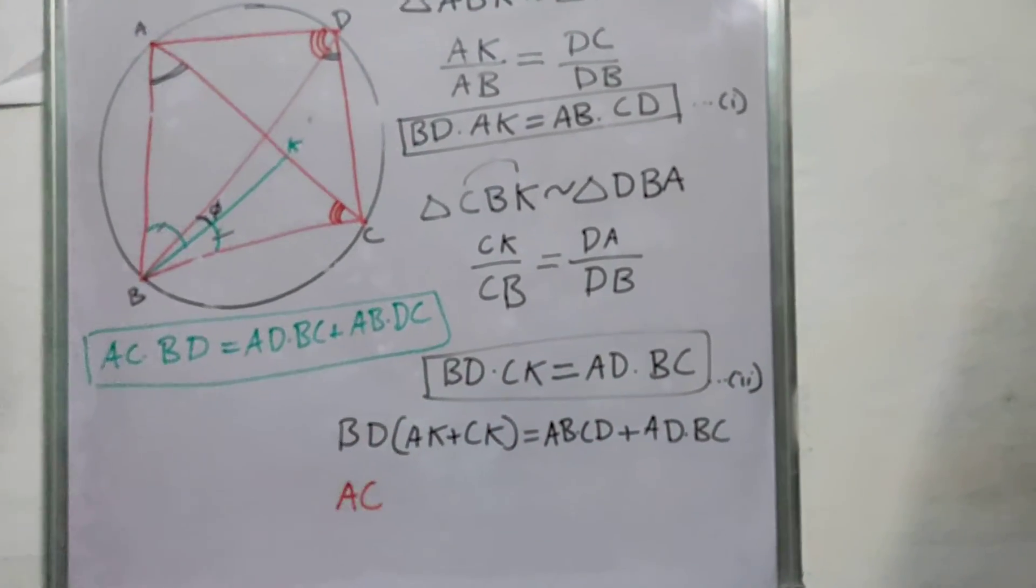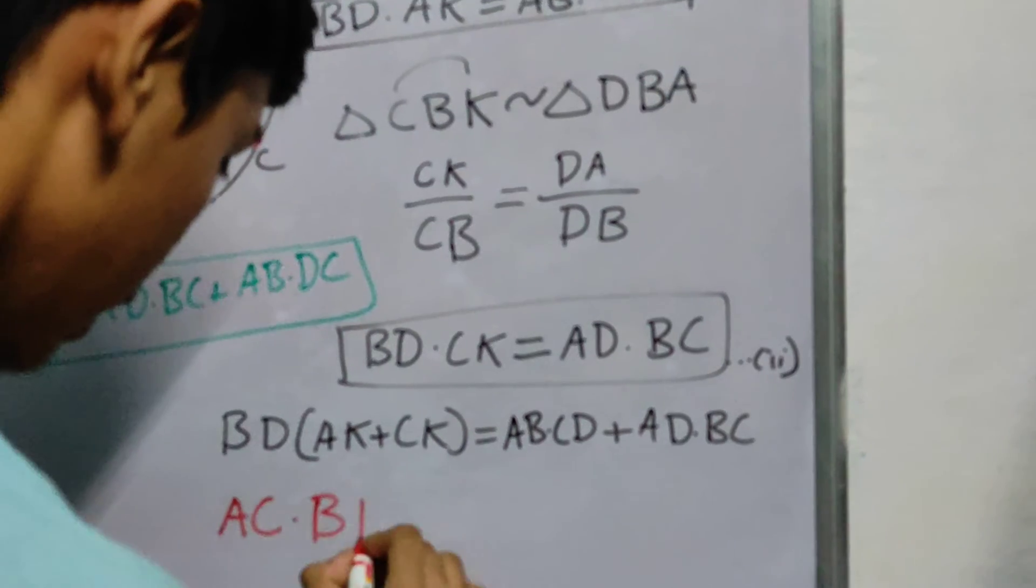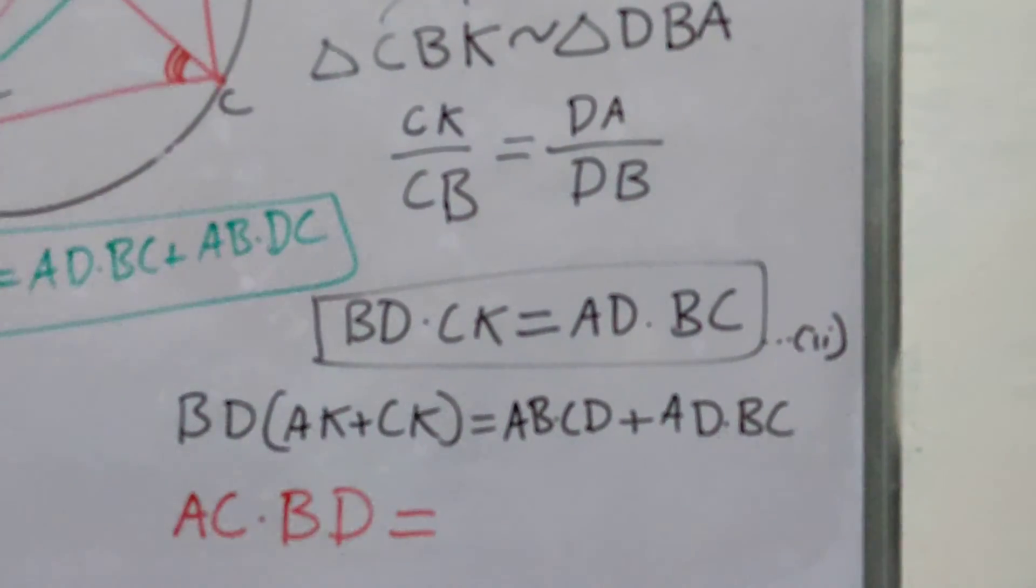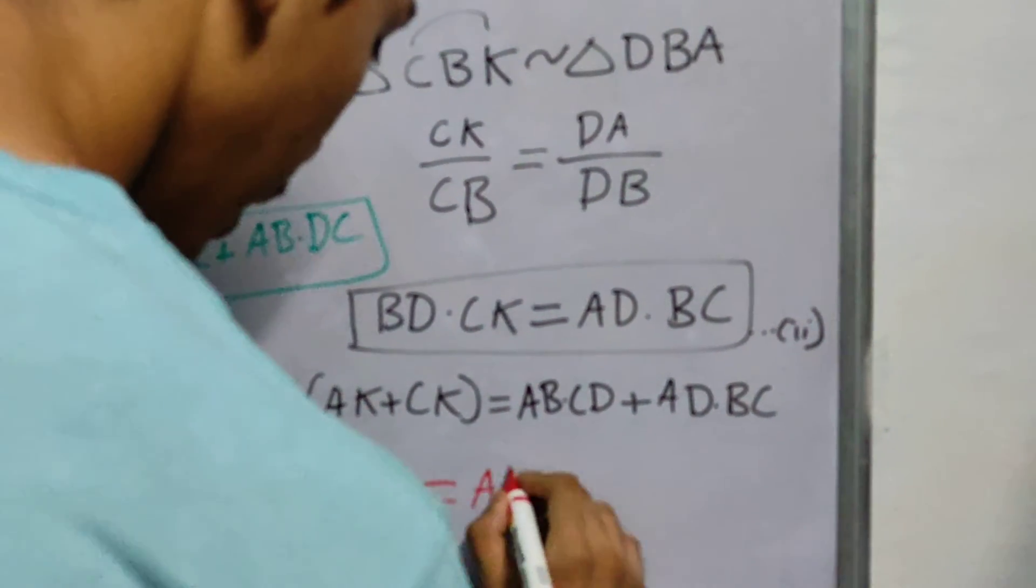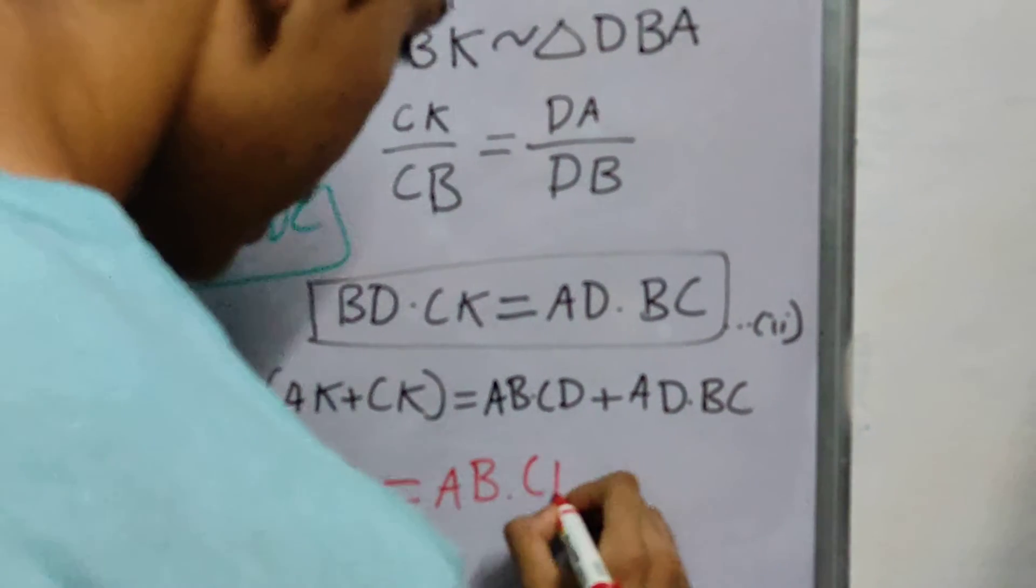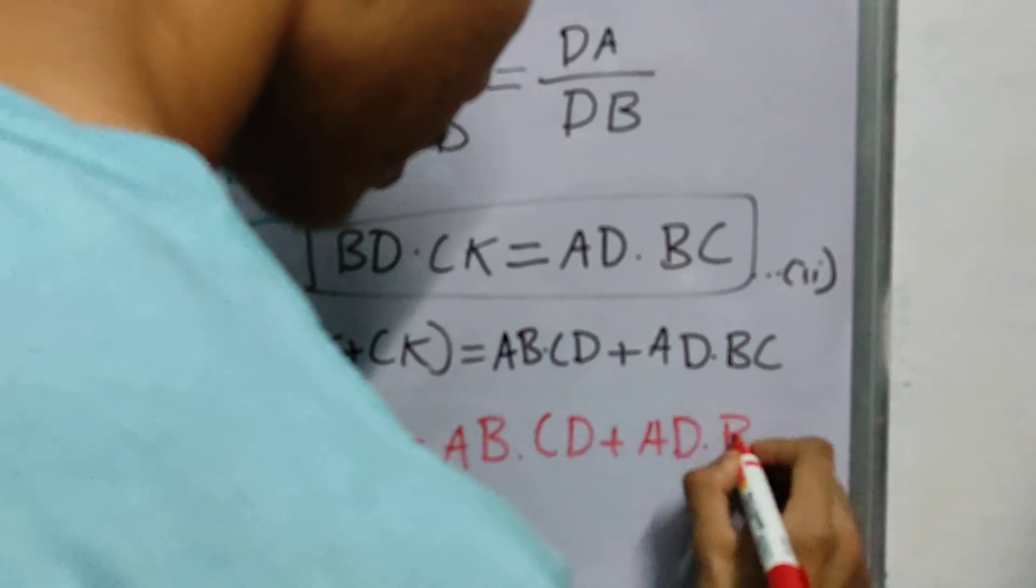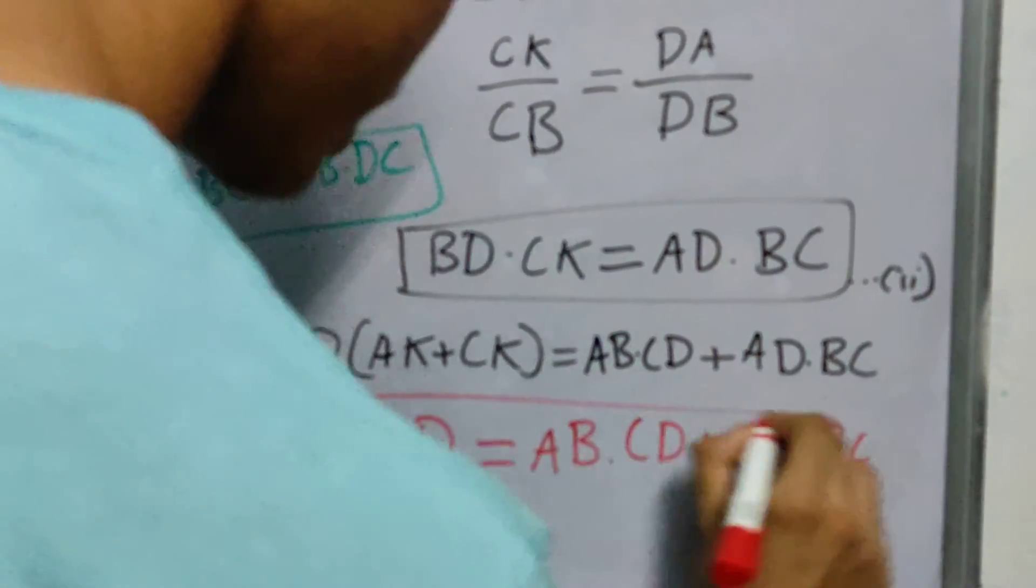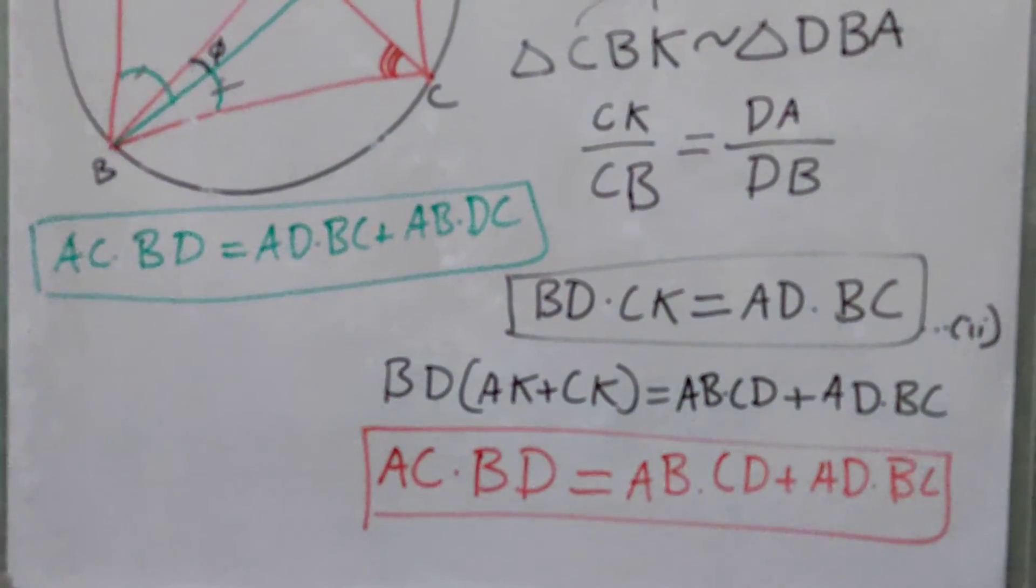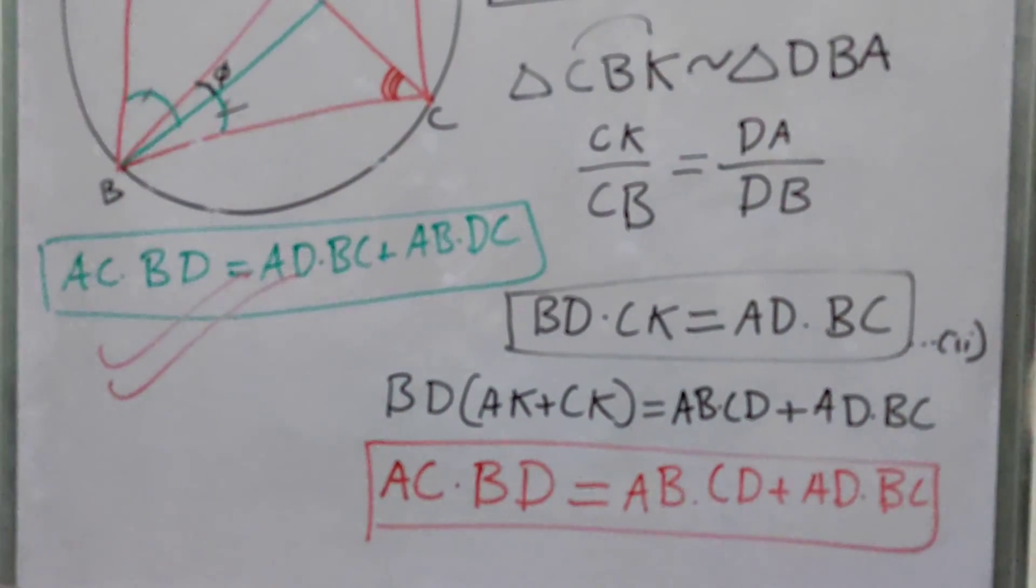AC times BD equal to AB times CD plus AD into BC, which is the Ptolemy theorem.